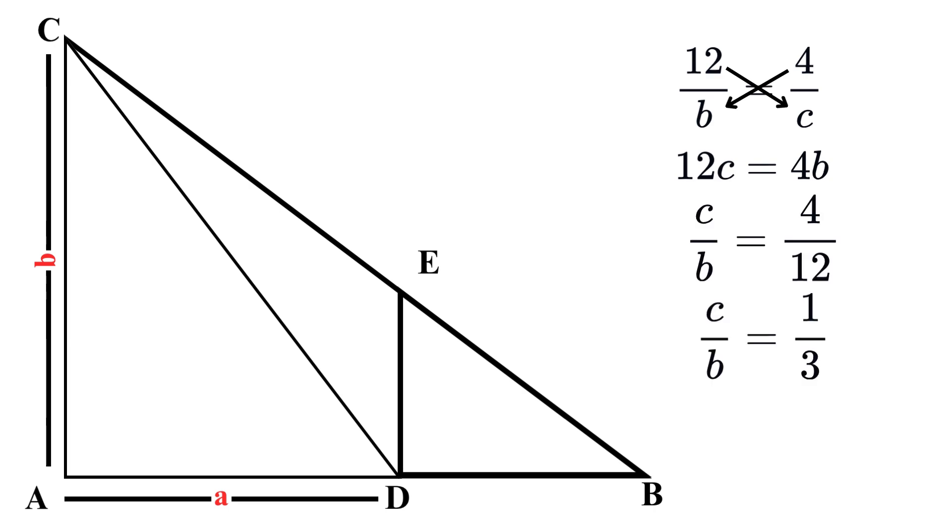Oh wait, let me recalculate that. If 12c equals 4b, then dividing both sides by 12b, we get c over b equals 4 over 12, and by simplification, it equals 1 over 3. So we can conclude that c over b equals 1 over 3, or in simple words, the ratio of c to b is 1 to 3.